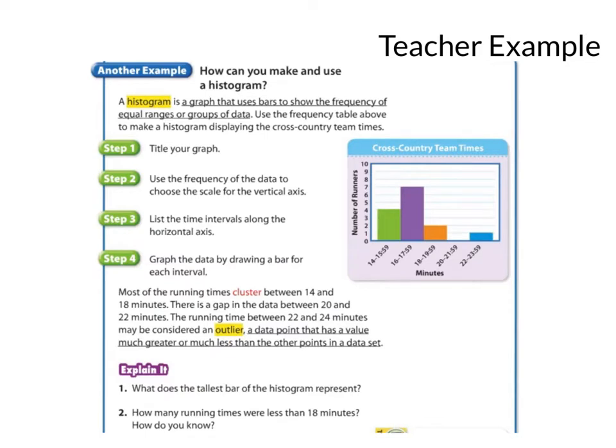So, here's our second teacher example. First, we talked about frequency tables. And now we're going to talk about histograms. So, a histogram, I see it kind of looks like a bar graph. But I see there's no gaps in between like the definition talked about. And it uses bars to show the frequency of equal ranges or groups of data. So, what's different than a bar graph is a bar graph will just kind of have like one piece of information.